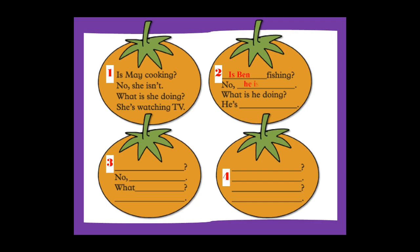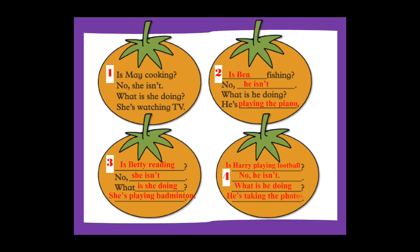Let's check the answers. The first one is May — is she cooking? No, she is not. Then what is she doing? She is watching TV. Number two: is Ben fishing? No, he is not. Then what is he doing? He is playing the piano. Very good.